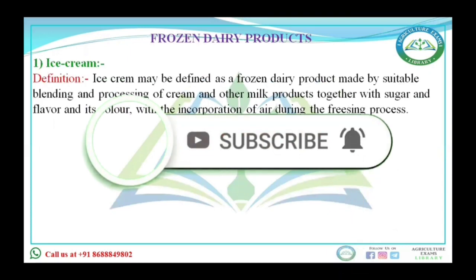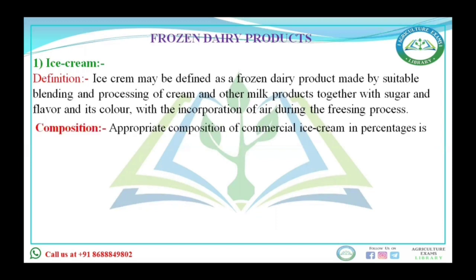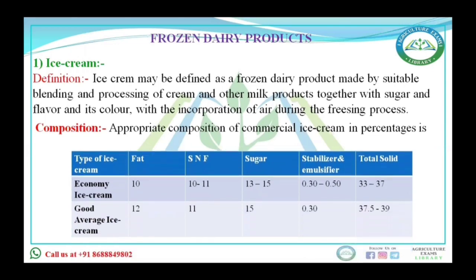Frozen dairy products: ice cream is a frozen dairy product made by suitable blending and processing of cream and other milk products together with sugar and flavoring agents. Types: economic ice cream has 10% fat, 10–11% SNF, 13–15% sugar, 0.30–0.50% stabilizer, and 33–37% total solids. Good average ice cream has 12% fat, 11% SNF, 15% sugar, 0.3% stabilizer, and 37.5–39% total solids.